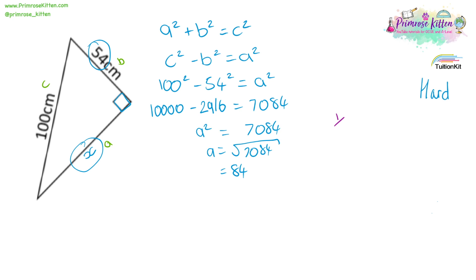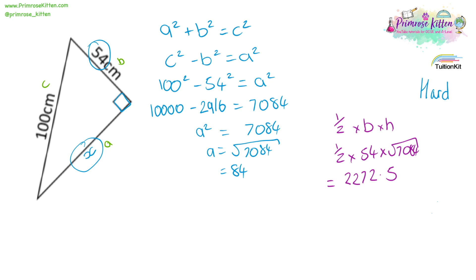So let's work out the area of the triangle. We can now do half times base times height: half times 54 times the square root of 7,084, which gives us an answer of 2,272.5 centimetres squared, rounded to one decimal place. If you rounded at the earlier stage and did half times 54 times 84, you would have got 2,268 centimetres squared — that is a wrong answer because you've introduced a rounding error. That's why it's always best to keep answers in exact form and store your numbers in the calculator.